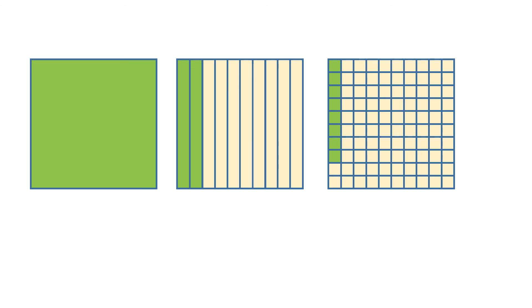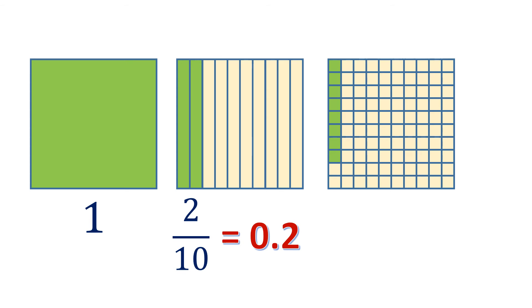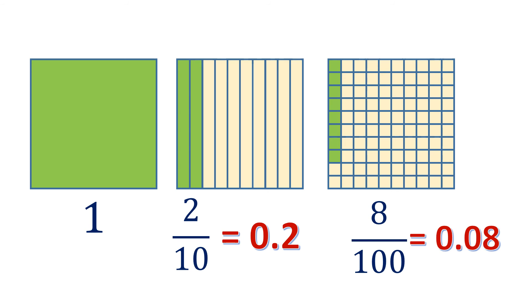Now, how about this? We are given figures and we're going to identify the decimal being visualized. The first figure is a whole box representing one. The second figure in the middle has two shaded parts out of ten — so it's two-tenths, or in decimal 0.2. The third figure at the right has eight shaded parts out of one-hundredth — so that's eight-hundredths, or in decimal 0.08. So all in all, in decimal it is 1.28, or one and twenty-eight hundredths.